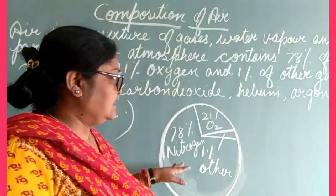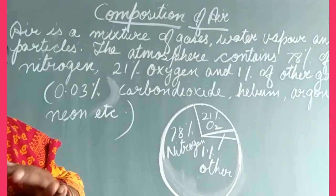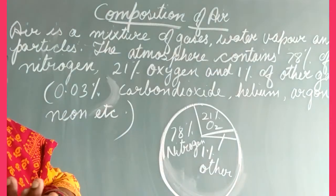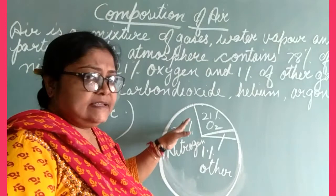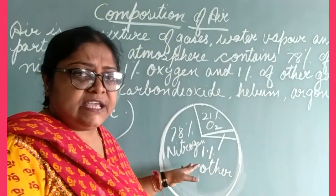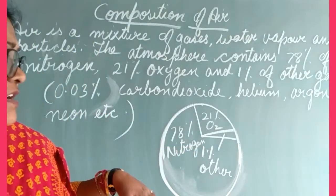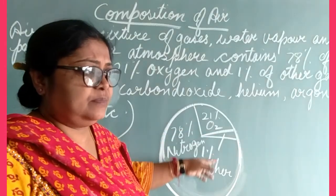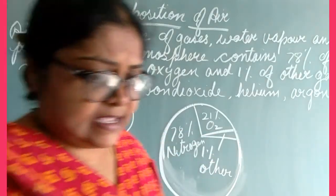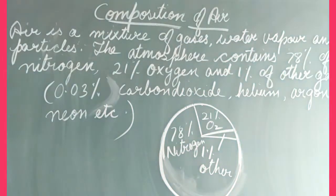Air is the mixture of gases, water vapour, and dust particles. In this atmosphere, 78% of nitrogen is there, 21% oxygen, and 1% other gases. So till here it is clear to you all.